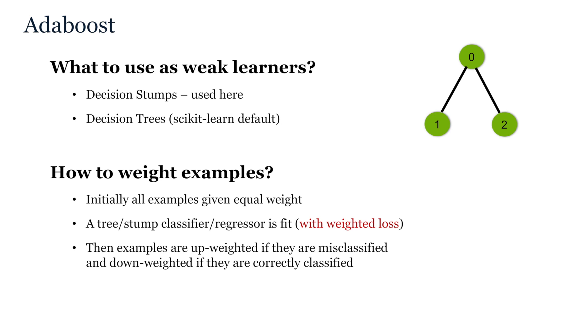So, the first thing to decide on is what to use as weak learners. Generally, implementations such as scikit-learn tend to use trees. However, in what follows, we will imagine decision stumps as these are easier to interpret. Secondly, let's look in more detail at the weighting process.